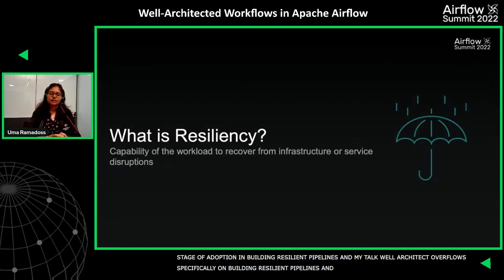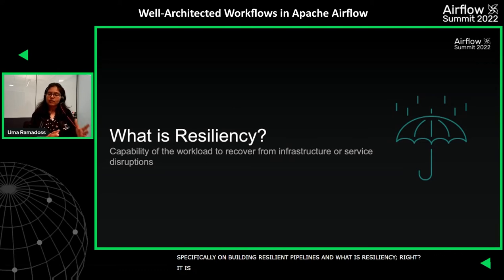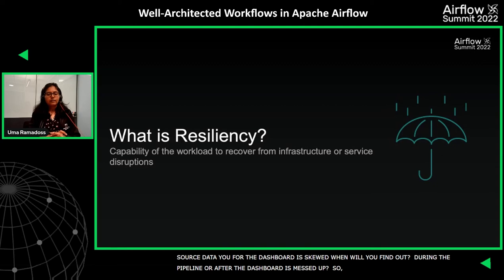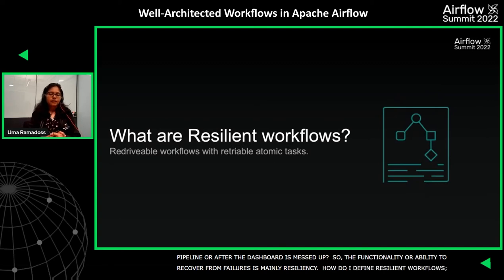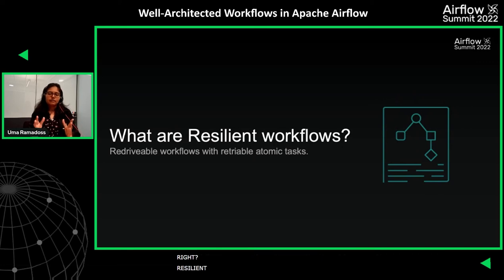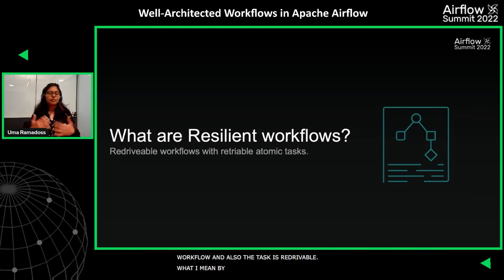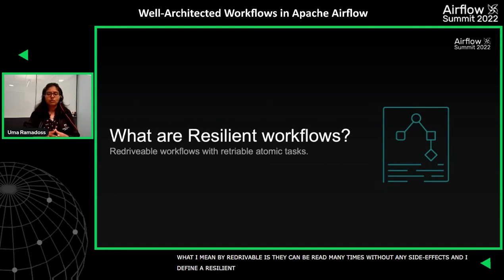So what is resiliency? It is the ability to recover from failures. You have a critical dashboard and the source data for it is skewed — will you find out during the pipeline, or after the dashboard is messed up? Resilient workflows consist of tasks which are atomic, designed with single responsibility, and can be retried automatically to solve transient errors. The entire workflow and task is re-drivable — meaning they can be re-run many times without any side effects. I define a resilient workflow as a re-drivable workflow with re-drivable atomic tasks.